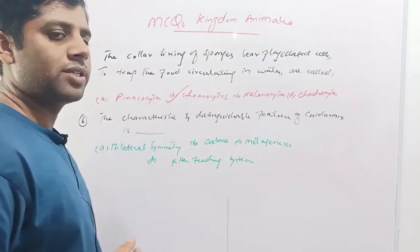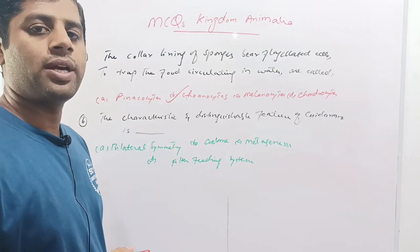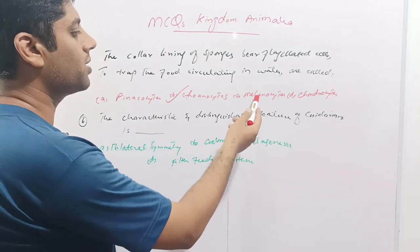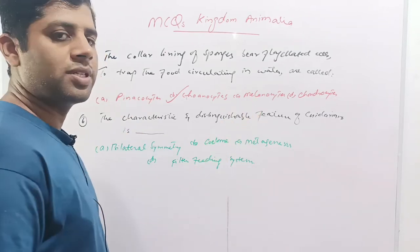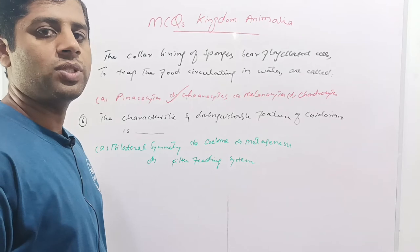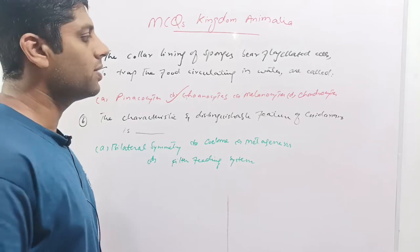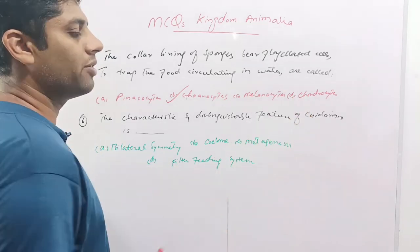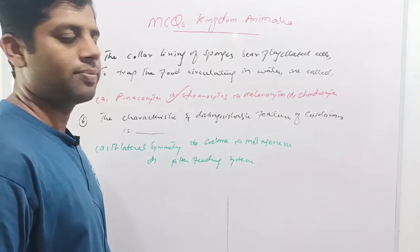Pinacocytes are the external lining cells of sponges. Melanocytes are the skin cells present in human beings which secrete melanin pigment. Chondrocytes are the cells of cartilage.